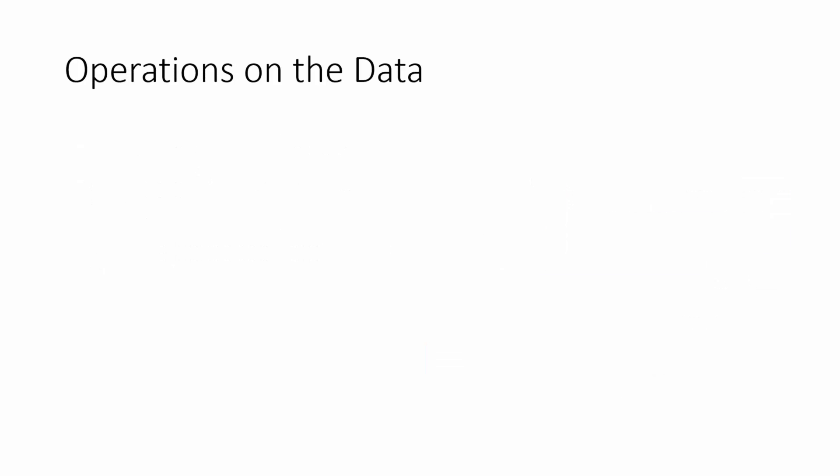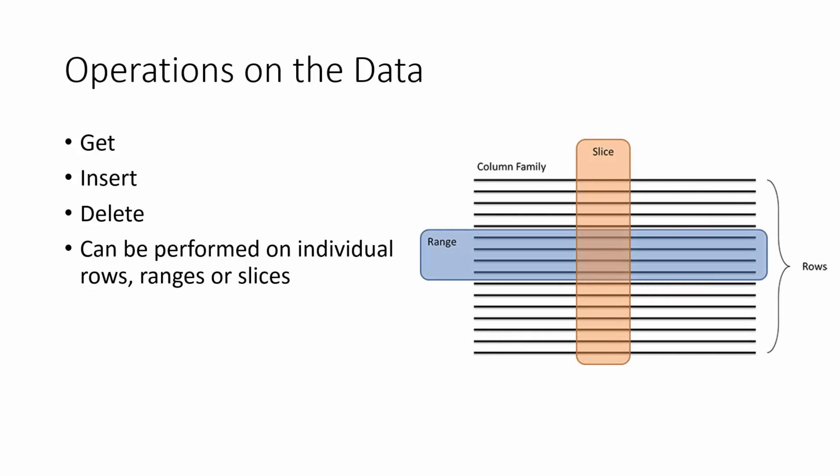Now let's see what operations are supported on the data in Cassandra. These are the basic operations you've seen with many NoSQL databases: you can do gets, inserts, and deletes. These operations can be performed on individual rows, ranges, or slices. A range is a collection of rows and a slice is a subset of columns.